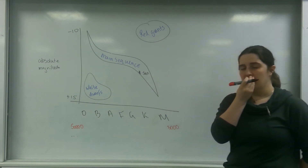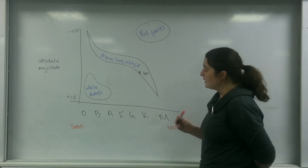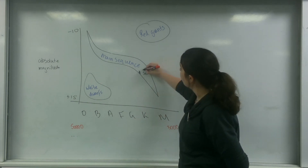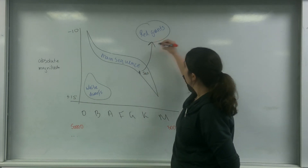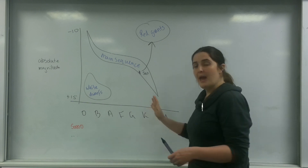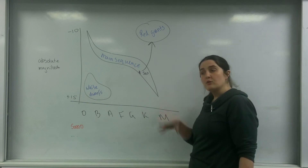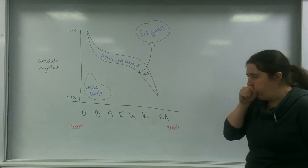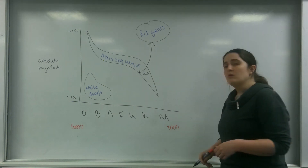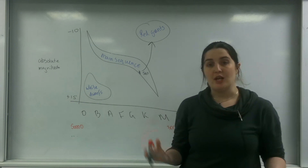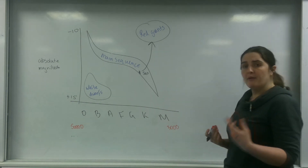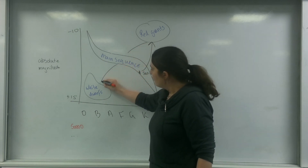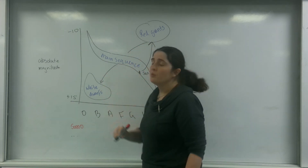When our Sun dies — covered in a later video — it will become a red giant, moving to an M-class star. Because it swells up, it gets much brighter. Once the outer shell is shed, we're left with only the dense, super-hot core, which brings it back down to become a white dwarf.